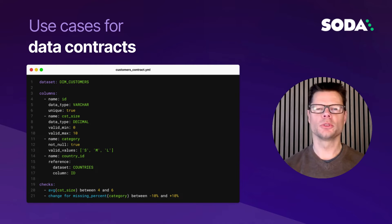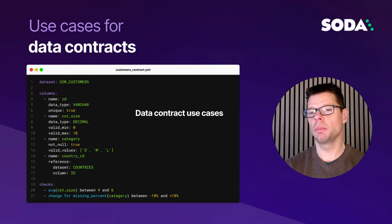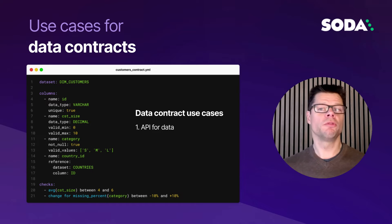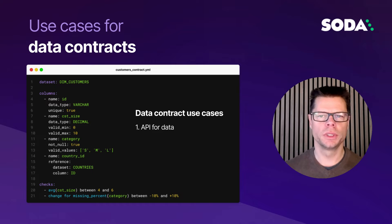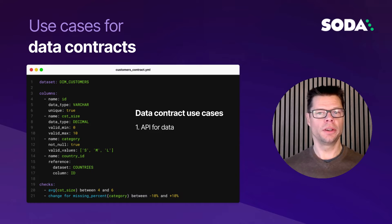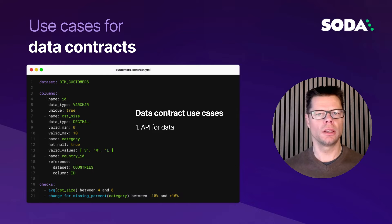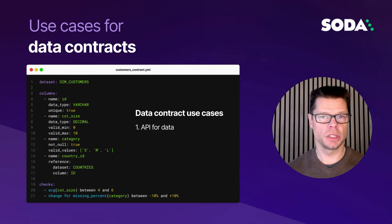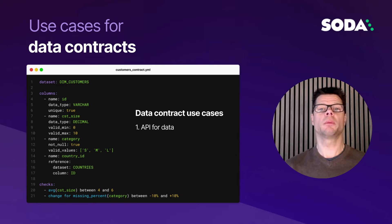There are three use cases to highlight. The first is communicating the API for data. When consumers want to find or understand data, they should be discovering only data covered by a data contract. The contract should contain all the details a consumer needs to start using that data, acting as a system of record for metadata surfaced in tools like a data catalog. Data contracts can also communicate upcoming changes like new or deprecated columns.